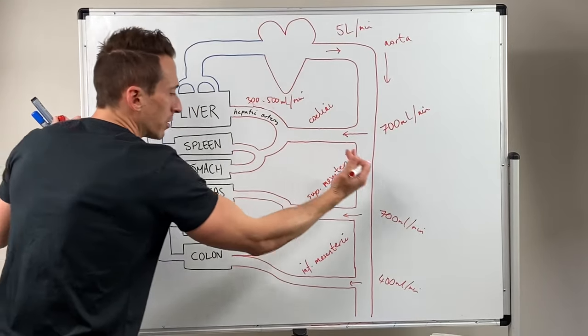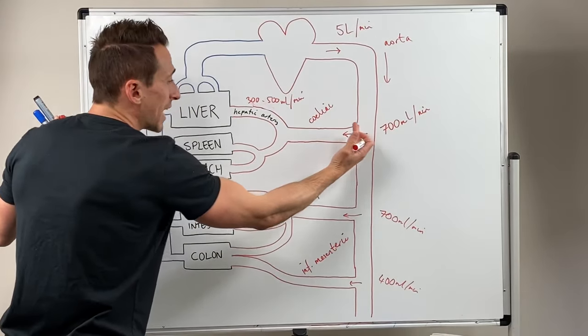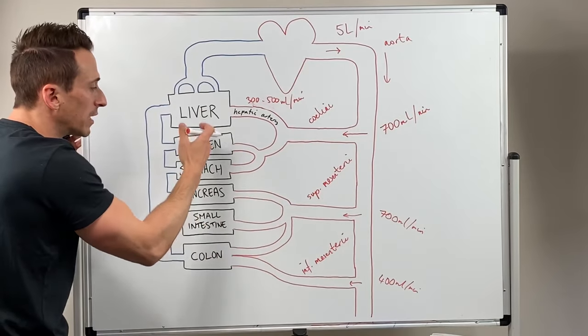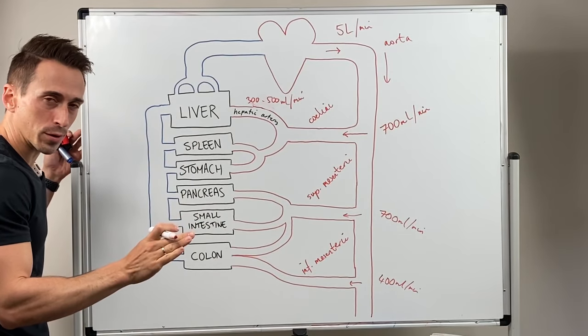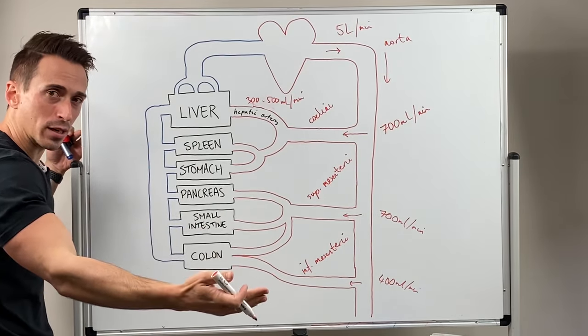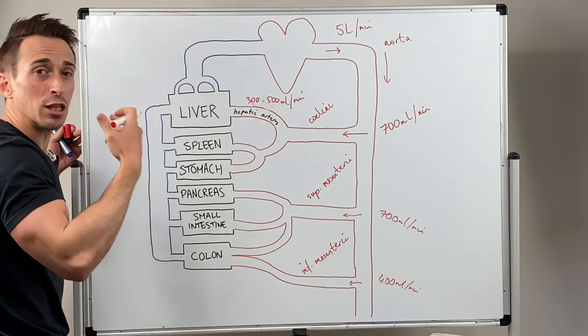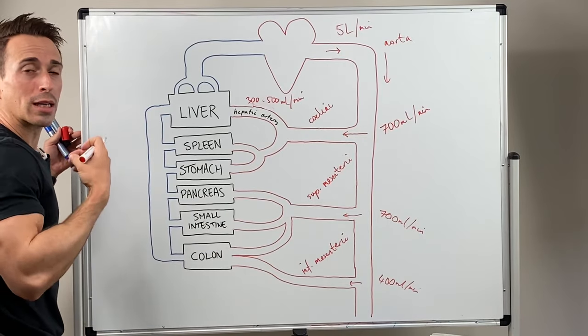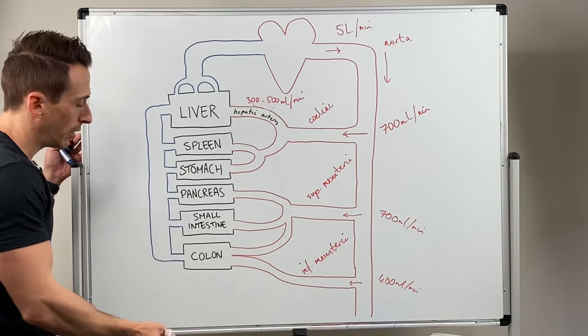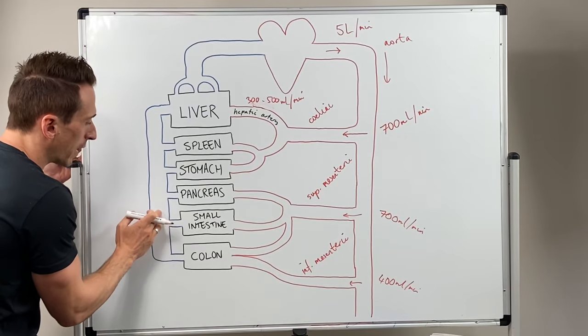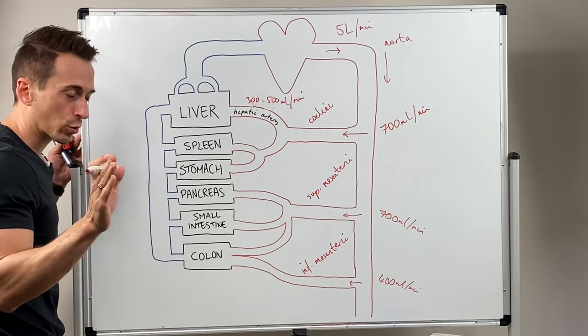This blood supply that's containing oxygen and nutrients to feed these tissues is very important. Obviously on the other end of the capillary beds, there's going to be various veins that drain the deoxygenated or more carbon dioxide saturated blood, and these veins all join up together.